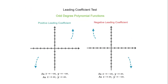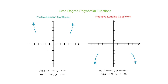To illustrate: odd degree with a positive leading coefficient goes down to the left and up to the right; a negative leading coefficient goes up to the left and down to the right. Even degree with a positive leading coefficient goes up on both ends, and a negative leading coefficient goes down on both ends.